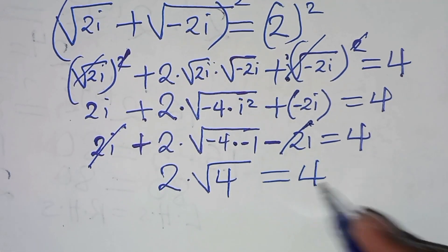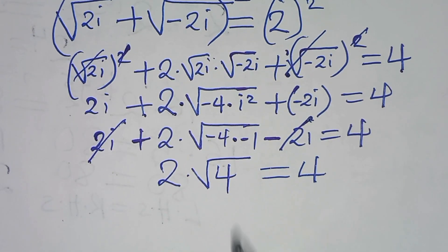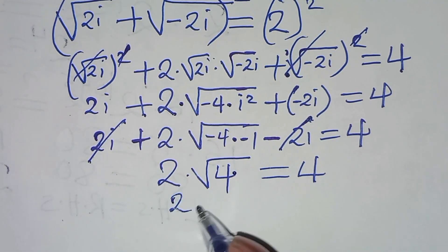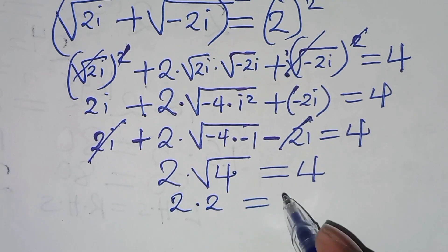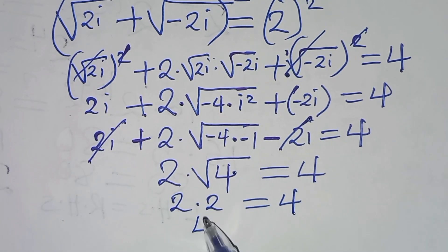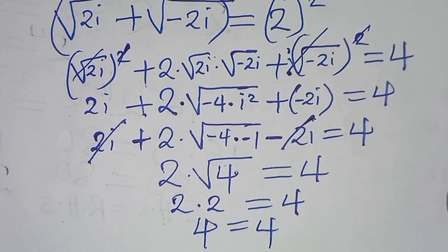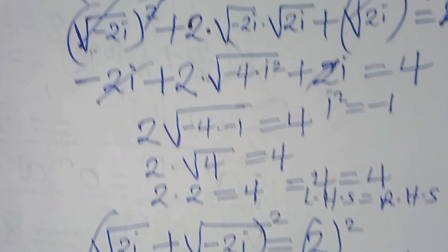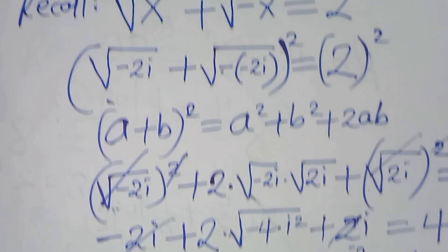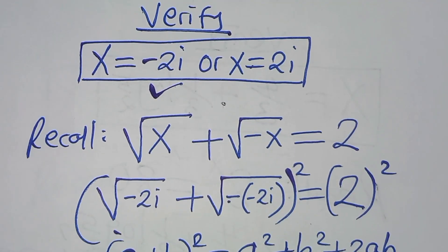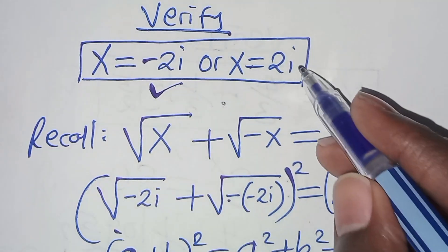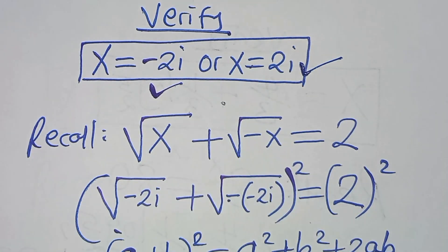Square root of 4 is 2, so we have 2 times 2 equals 4, which equals 4. The left hand side equals the right hand side. This confirms that both values x equals 2i and x equals negative 2i satisfy the equation. Please like this video and subscribe — see you in the next video, bye bye.